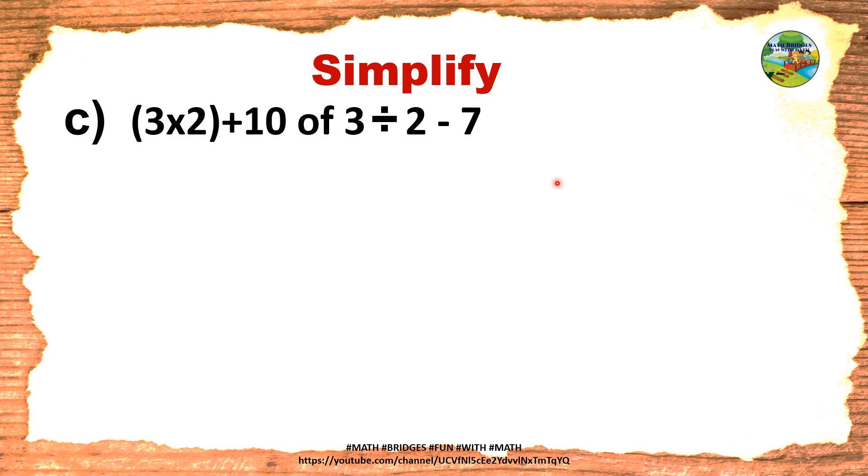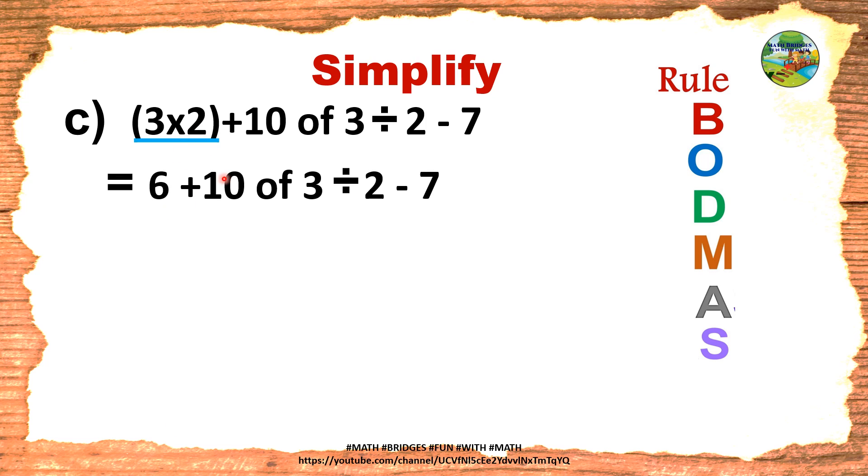Let's see one more example with all the operations here. And write the rule BODMAS. Check in the question, is brackets there? Yes. Underline. So we will solve only this part. 3, 2 is 6. Remaining all as it is we will write. And tick it, brackets is over.